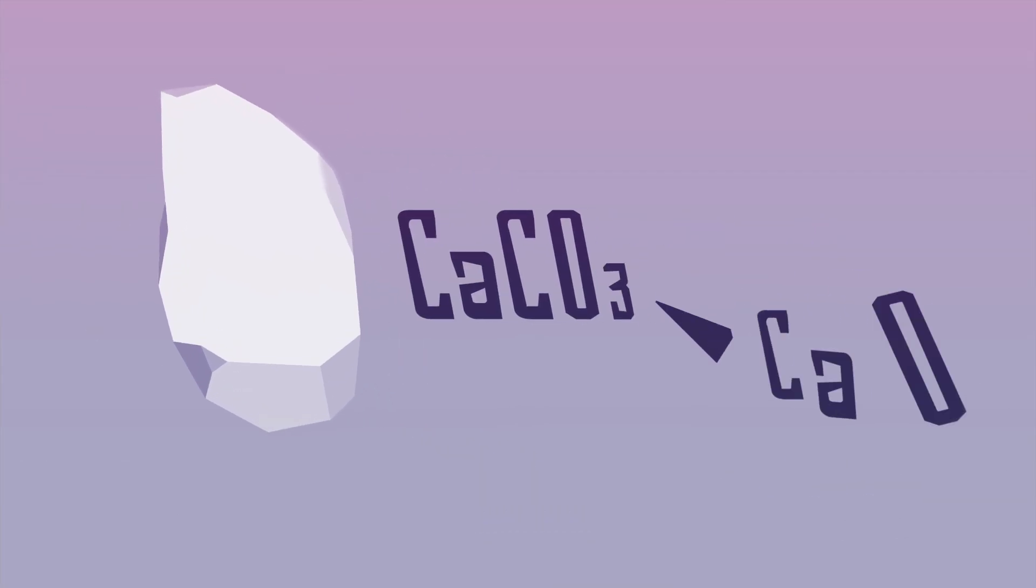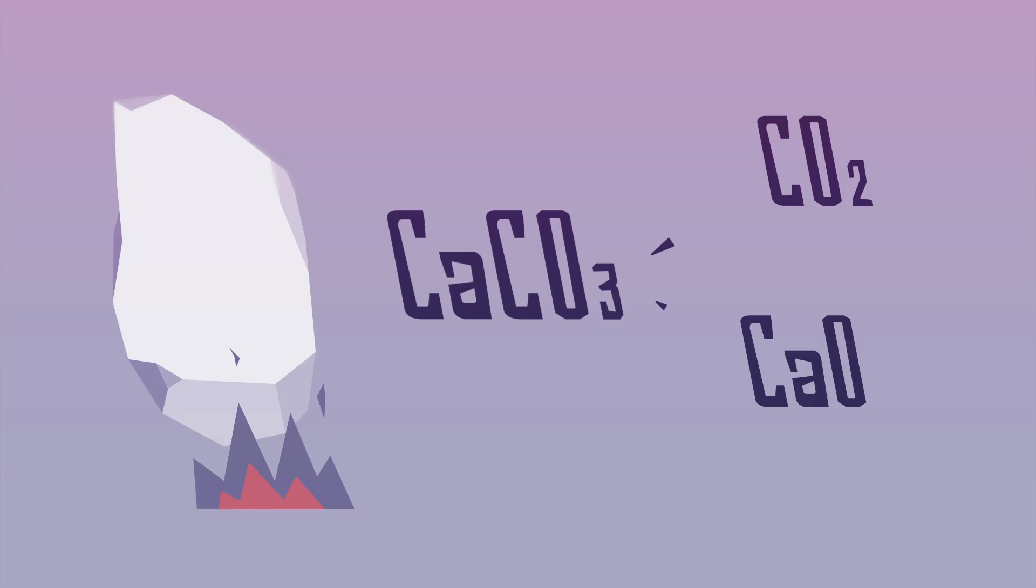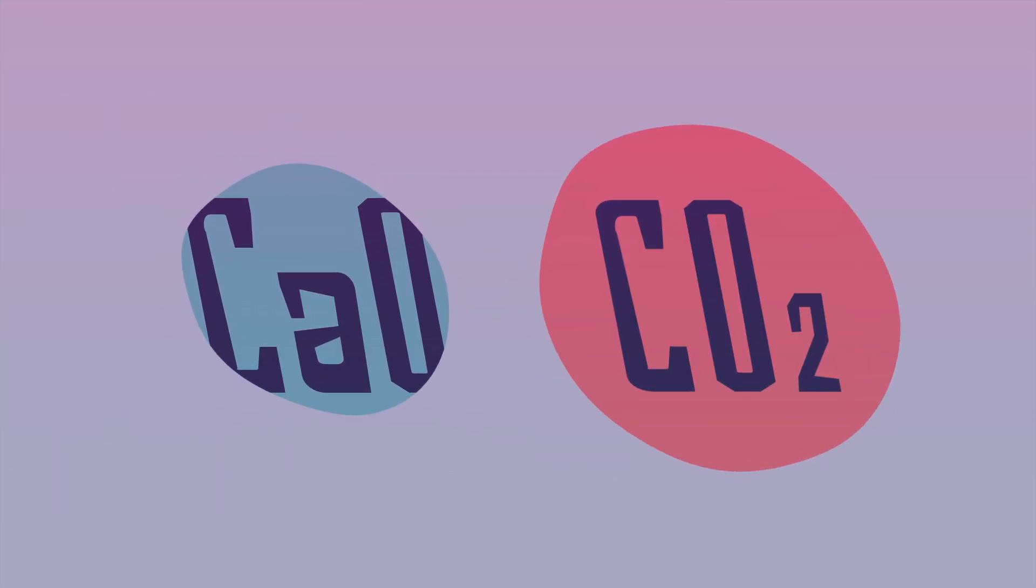We extract CaO from CaCO3 by heating limestone. What's left is CO2, carbon dioxide. So for every tonne of cement we produce, we release one tonne of carbon dioxide.